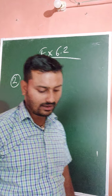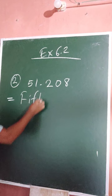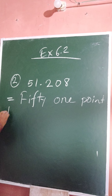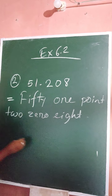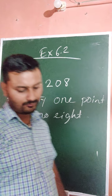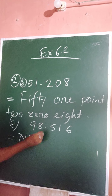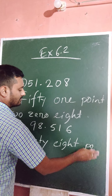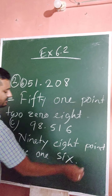Part (b) is 51.208: fifty-one point two zero eight. Part (c) is 98.516: ninety-eight point five one six.